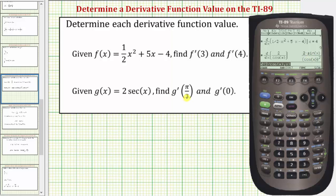Now to find g'(π/3), we press the right arrow, the vertical bar, and then x = π/3. So x = π is second, then the exponent key, divided by 3, and enter. So g'(π/3) = 4√3.